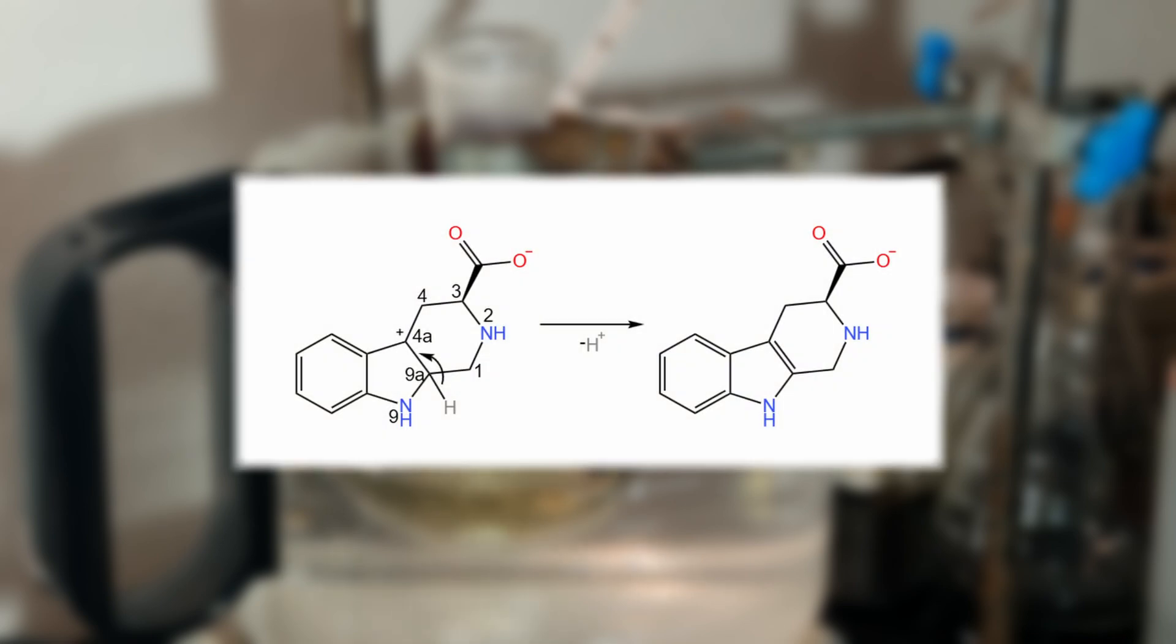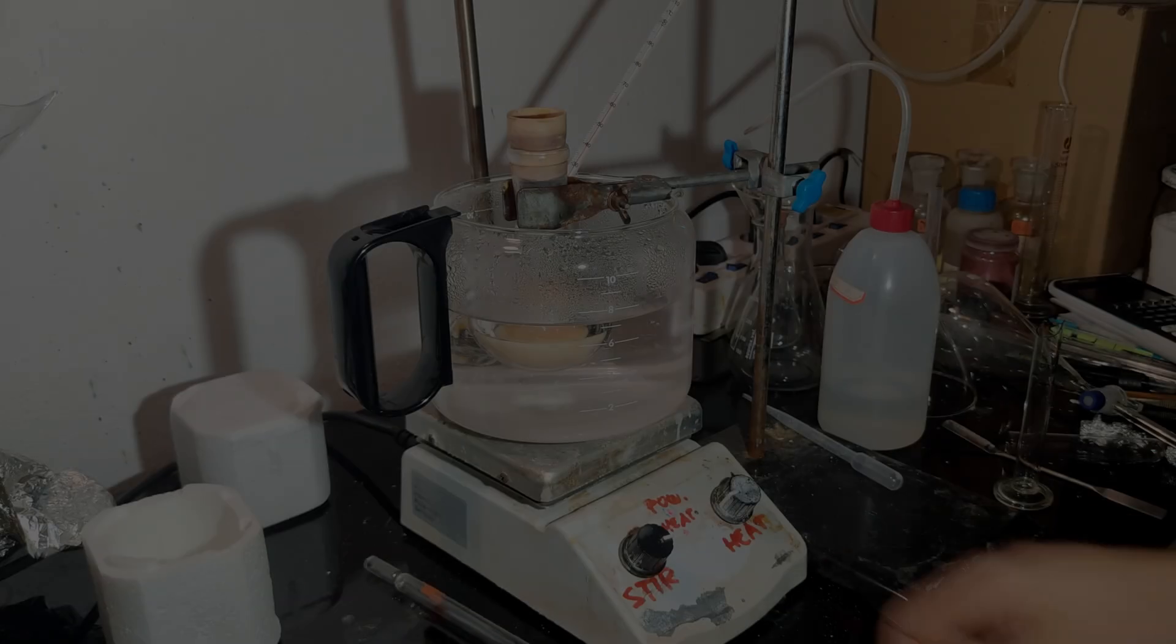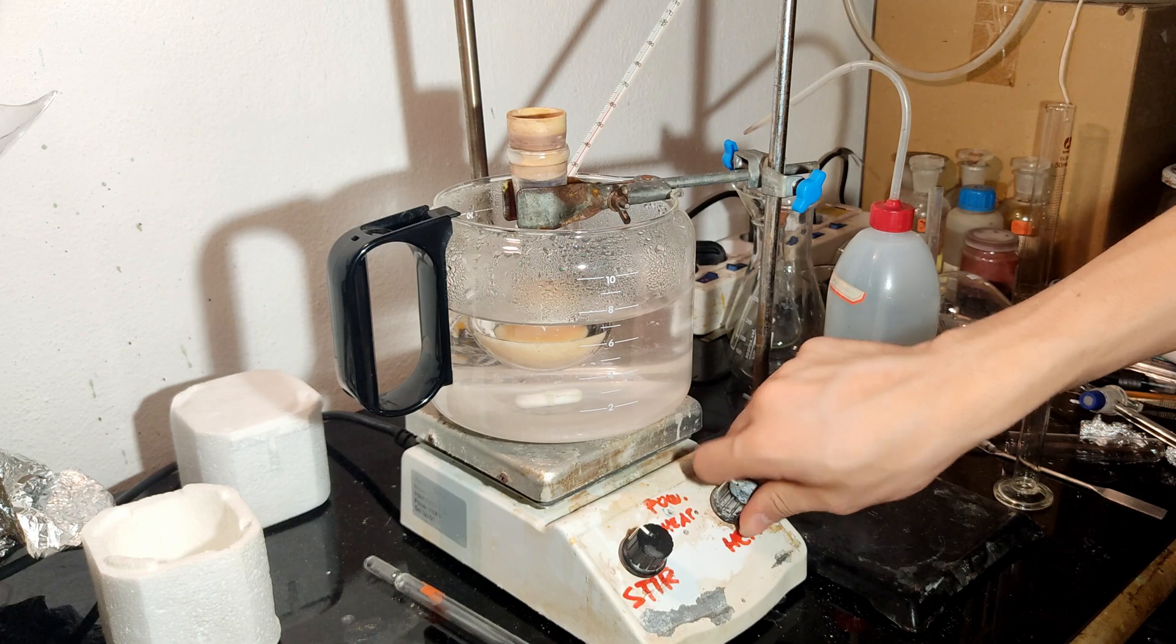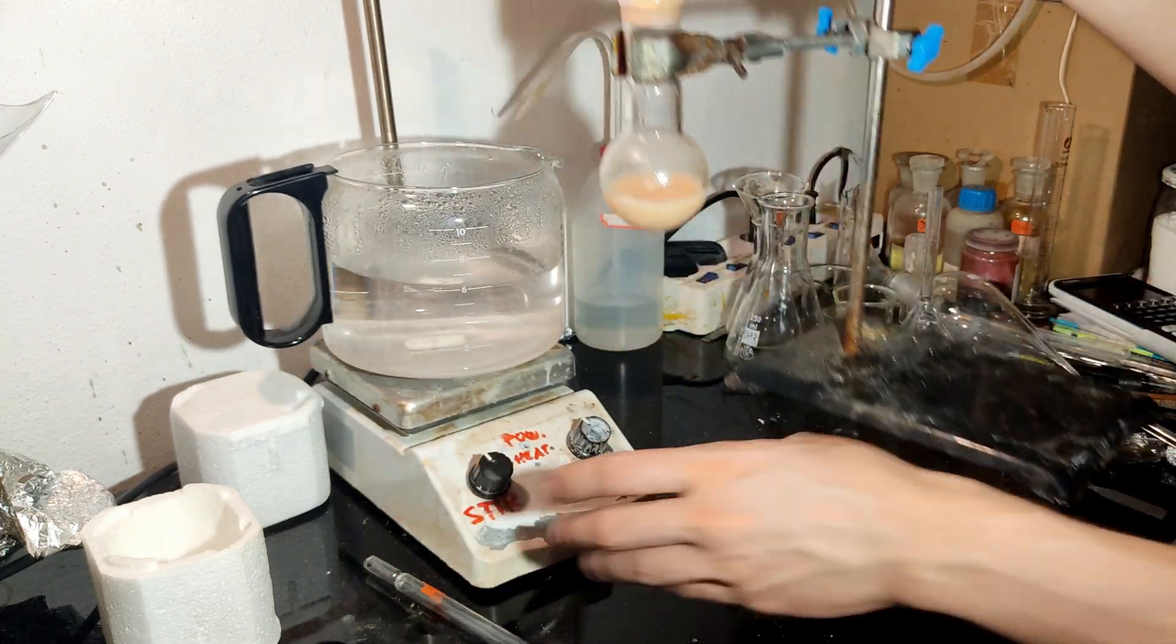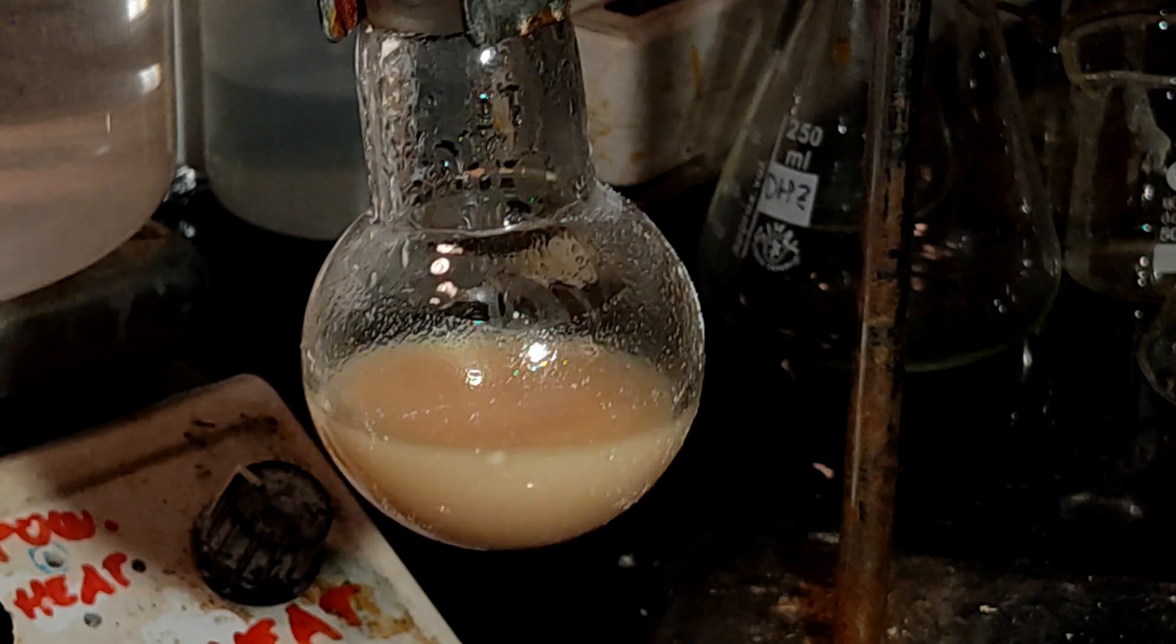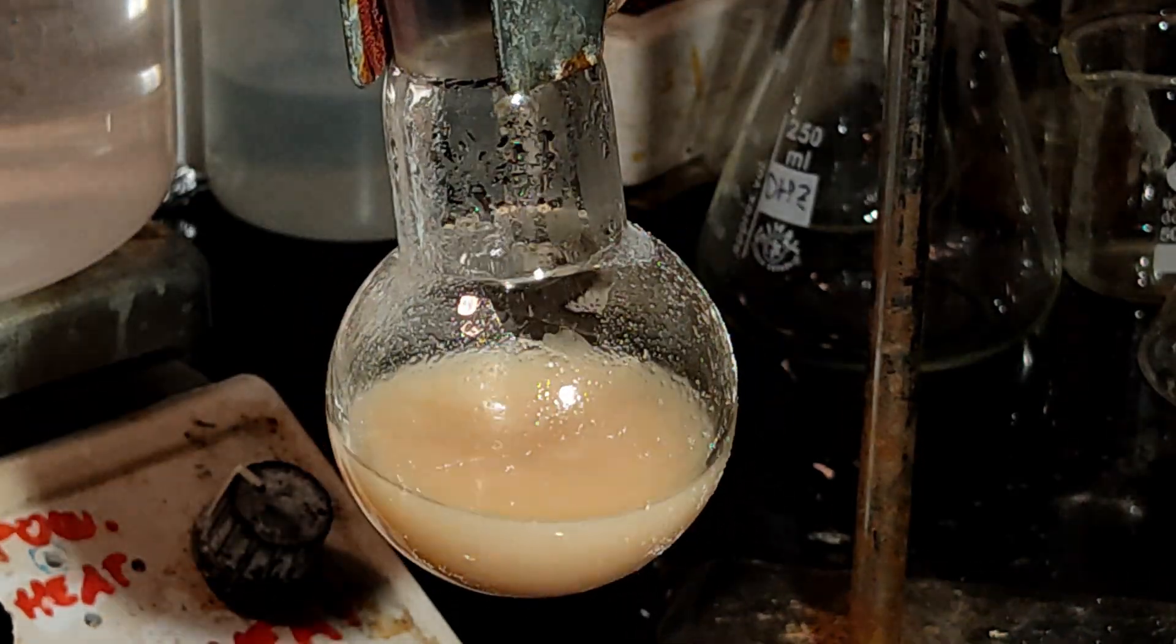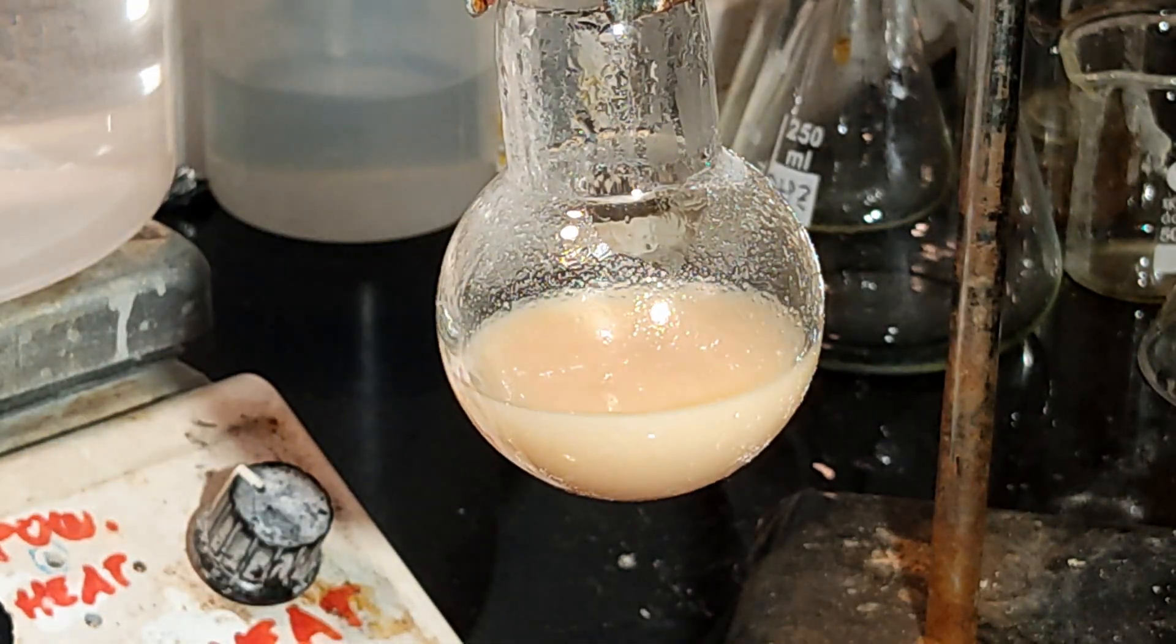Finally, the hydrogen in the 9A position leaves as H+, and the bond electrons form the pi bond in the 4A-9A position. At the end of the reaction, a precipitate can be seen in the flask consisting principally of the sodium salt of 3S-1,2,3,4-tetrahydro-beta-carboline-3-carboxylic acid. The slurry was placed in the fridge.